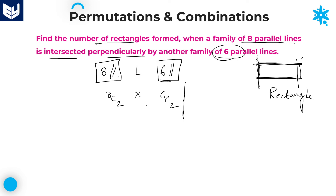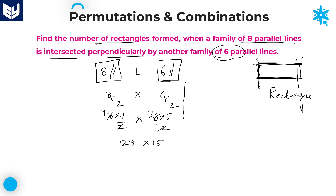Forming a rectangle is completed at this point, so you use the multiplication symbol. 8C2 equals 8 into 7 divided by 2, and 6C2 equals 6 into 5 divided by 2. Here 8/2 gives 4 and 6/2 gives 3. So 4 into 7 is 28, and 3 into 5 is 15. Multiplying these two: 28 into 15 — that is 280 plus 140 — which equals 420.